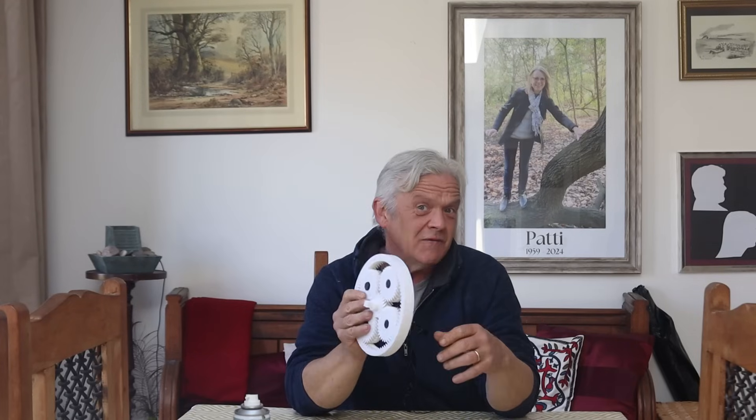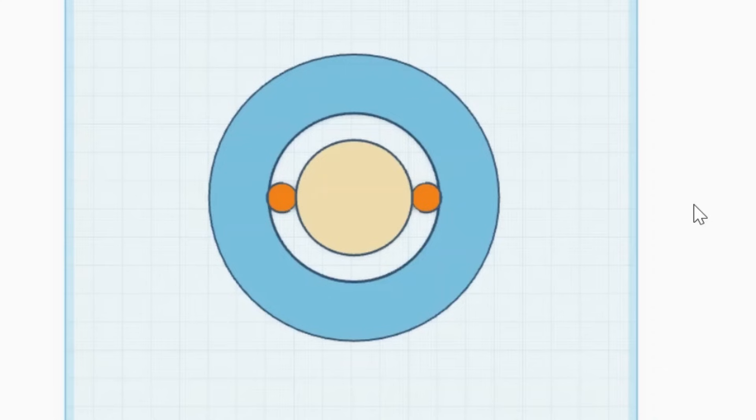So these things, planetary gearboxes. Now, they're thought of as pretty complicated things, and in a sense they are. They're pretty marvelous as it happens. But to design and make them using 3D printing actually is really simple. You only need to remember a couple of things. Let's have a look at this.